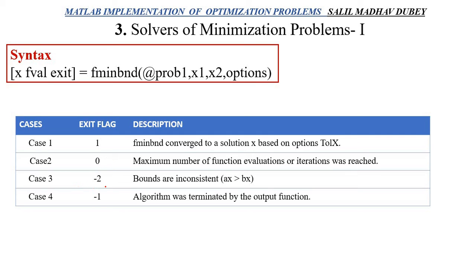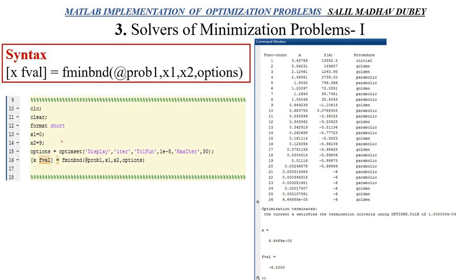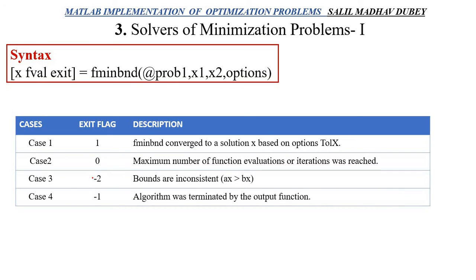Case 3 is minus 2, in which suppose I already told you that x1 and x2 are lower bound and upper bound. If I write it reversed, x1 as nine and x2 as zero, then I will get exit value minus 2.